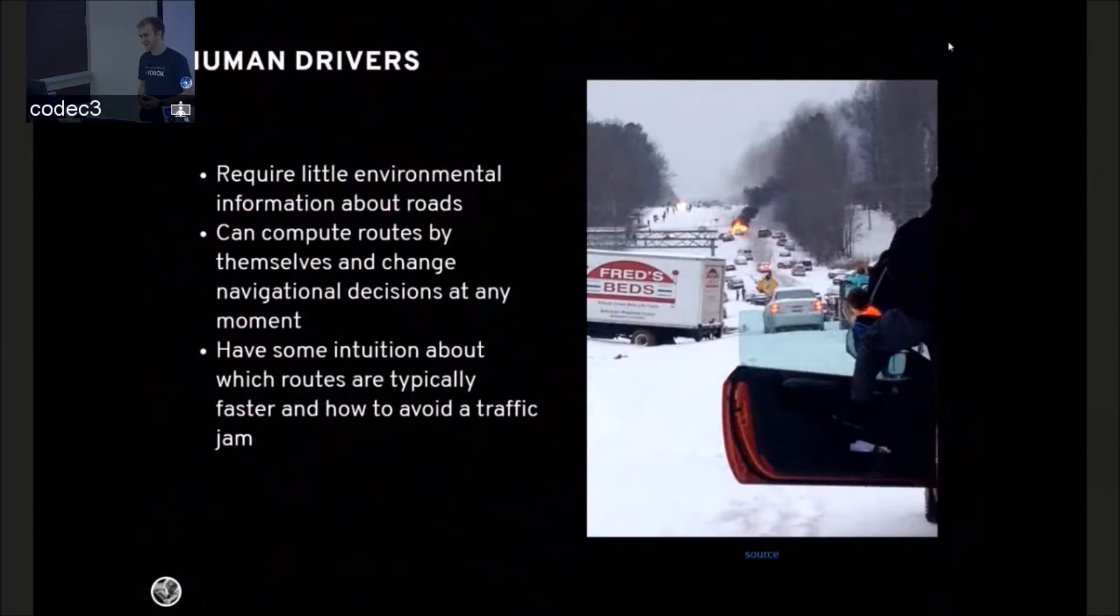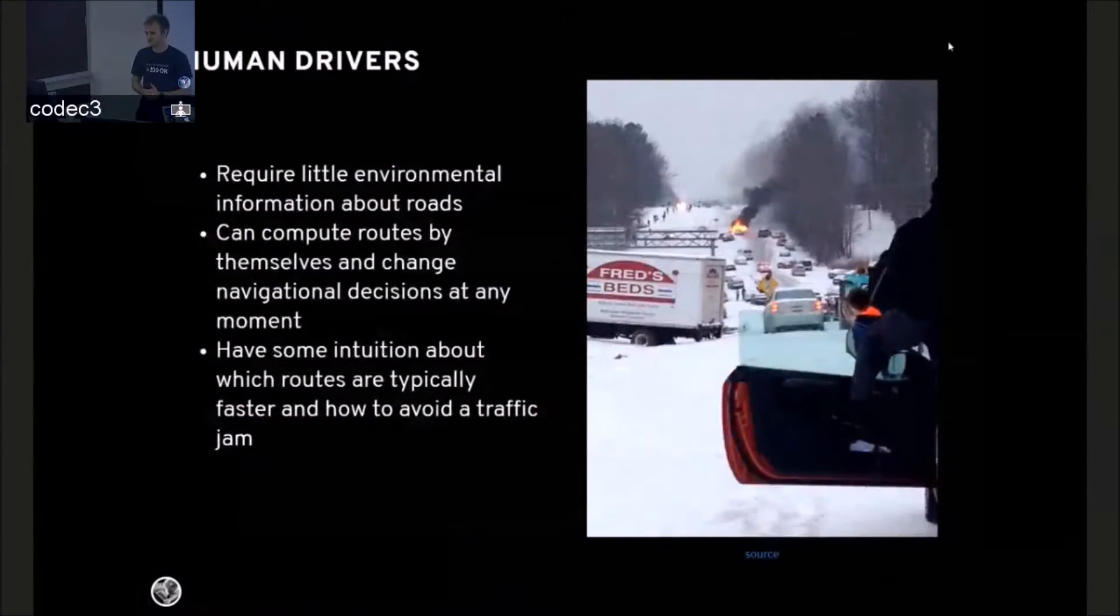Human drivers require a little bit of environmental information about roads, but not very much. They can compute routes by themselves, and they change navigational decisions at any moment. They have some intuition about which routes are typically fastest, and they know how they wish to handle a traffic jam.